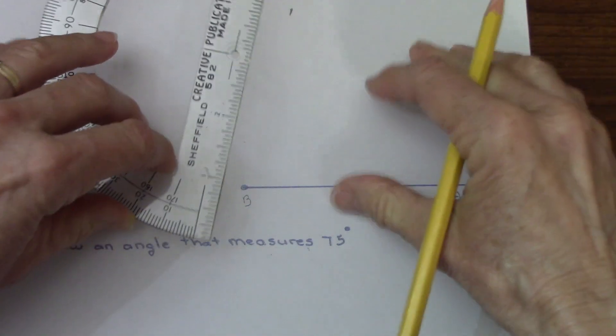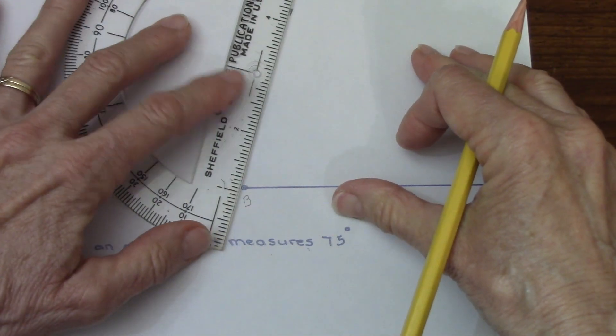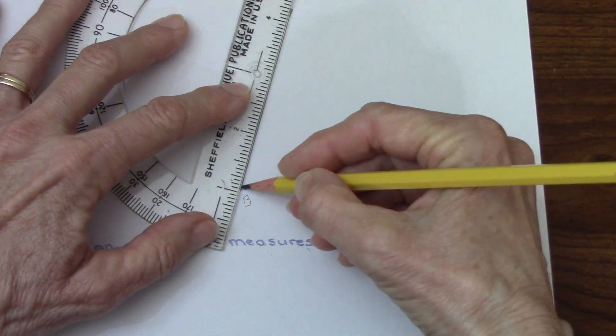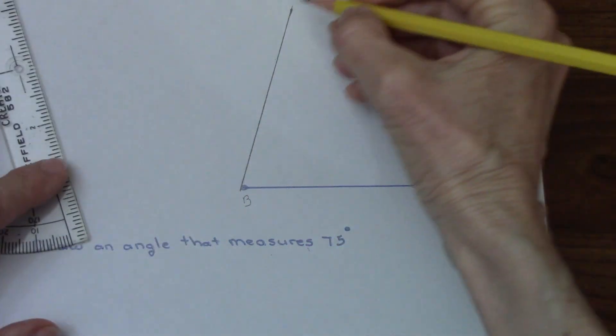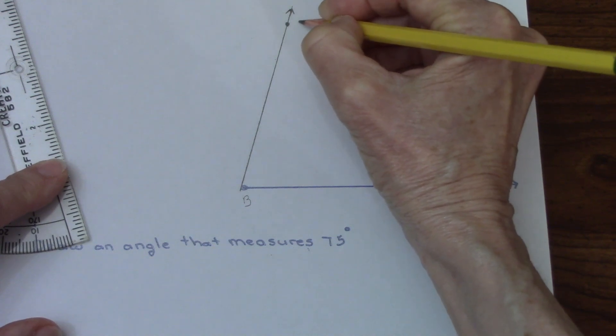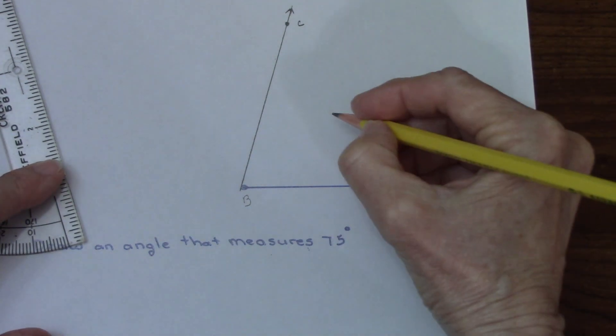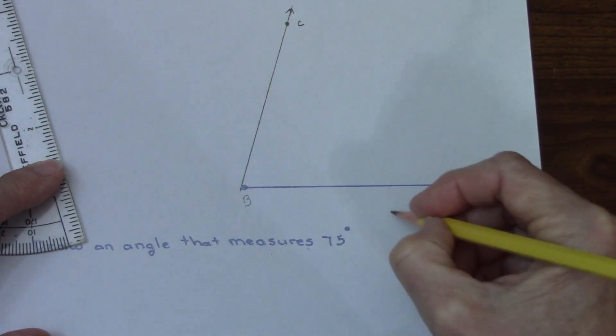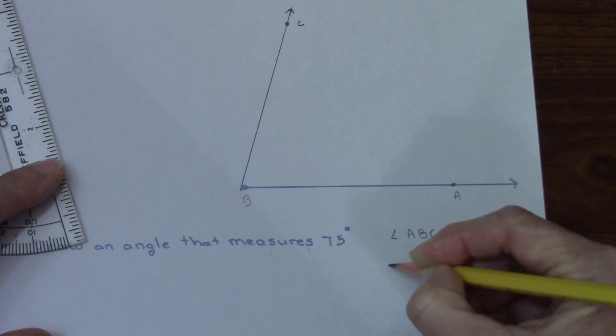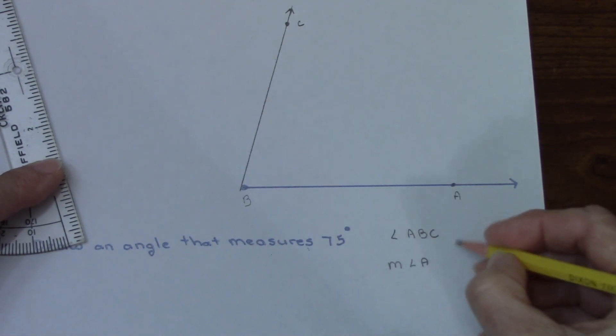Then I'll turn this and connect this mark to the vertex, and there we go. This is point C. Any point along here is fine. This gives me angle ABC, and I can write that the measure of angle ABC equals seventy five degrees.